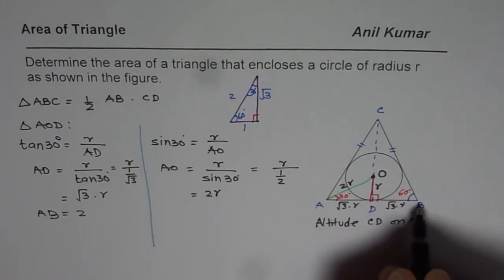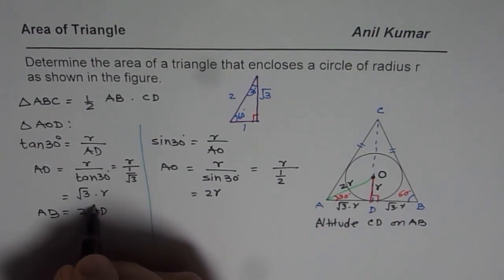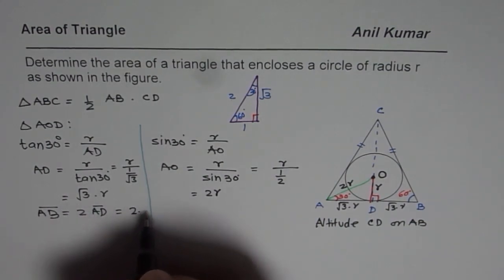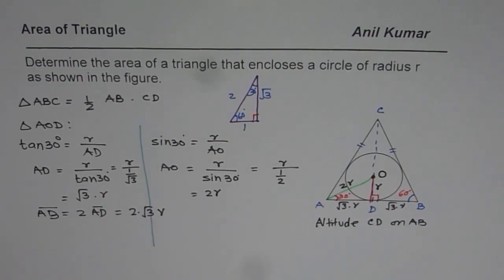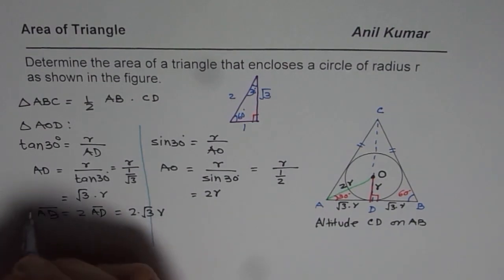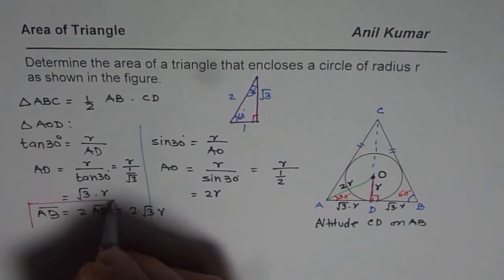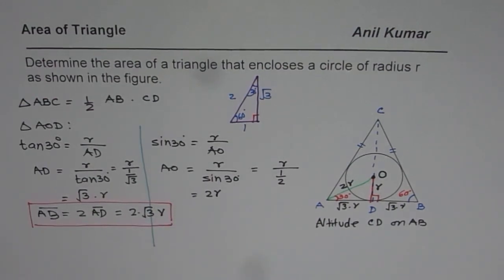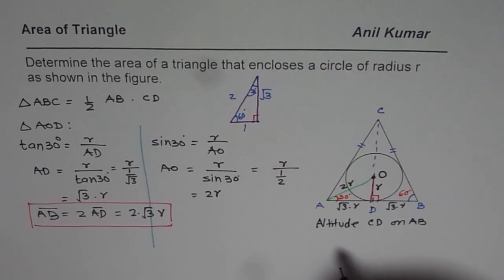So length of AB is 2 times AD, that means 2 times square root 3 times R. So that is the base. Let me just highlight this. This is a very complicated question and therefore I am taking my time to really find the way of solving.